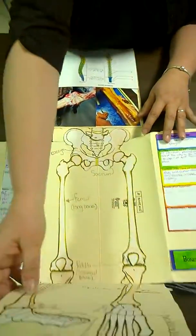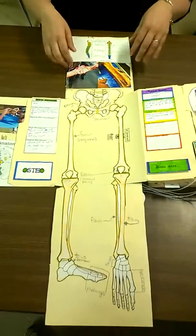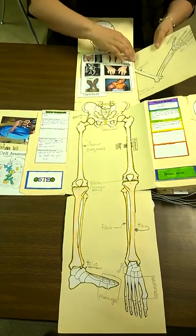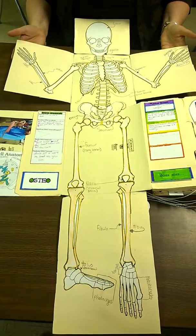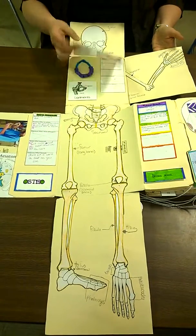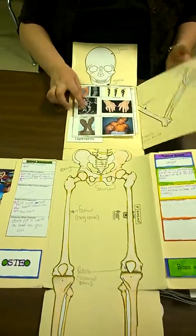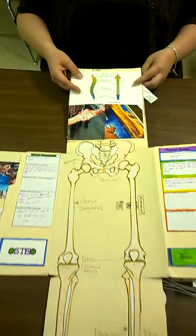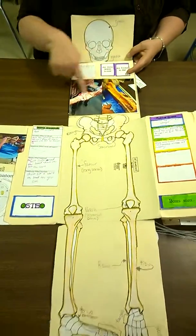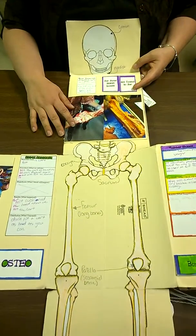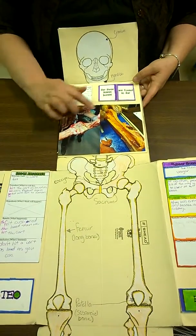This was our skeletal section for lesson two. We have lots of things hidden from lots of activities that we've done. And I always included pictures of different dissections that we did throughout the year.